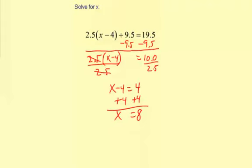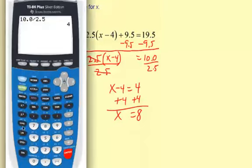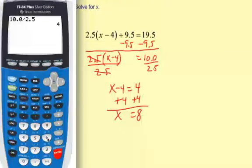Now let's use the calculator to check the answer. I'm going to enter it just like it's written here, except I'm going to put an 8 instead of an x. So 2.5, open parentheses, 8 minus 4 plus 9.5.